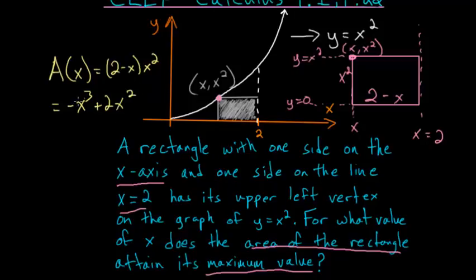And since it has a negative coefficient, it would look something like this. And since we're not dealing with negative values of this area function, we don't really have to concern ourselves with this back piece here. And to find the maximum value, that's essentially this point here.